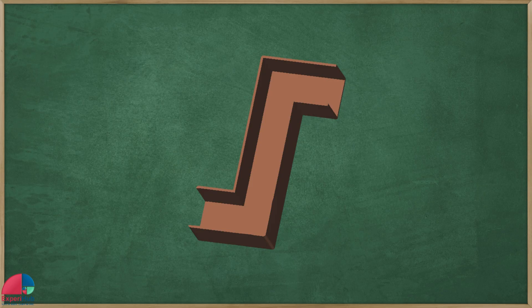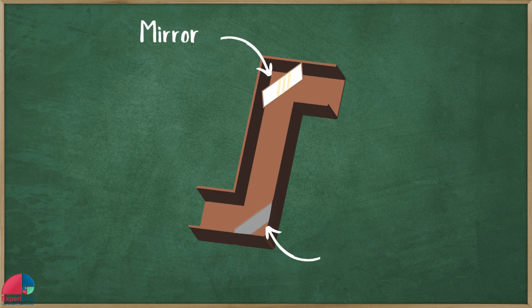A periscope has two mirrors inside it, one at the top and one at the bottom. These mirrors are set at a 45 degree angle with the vertical.